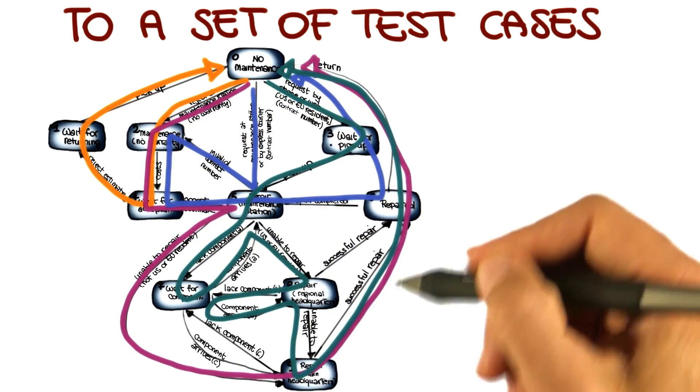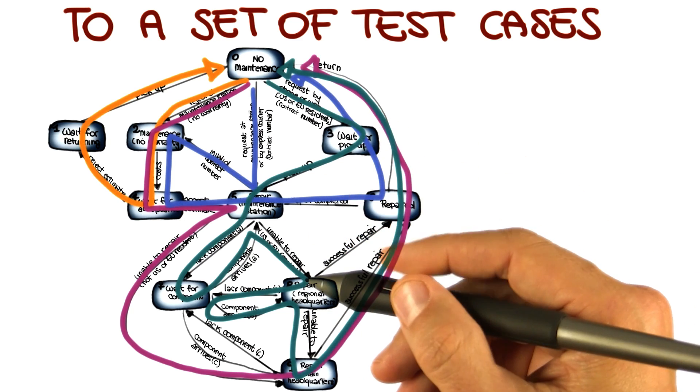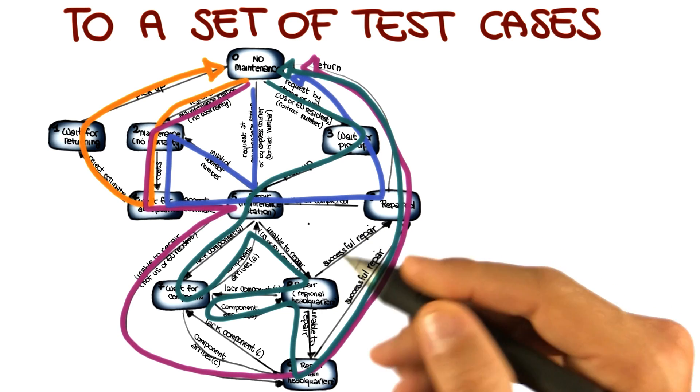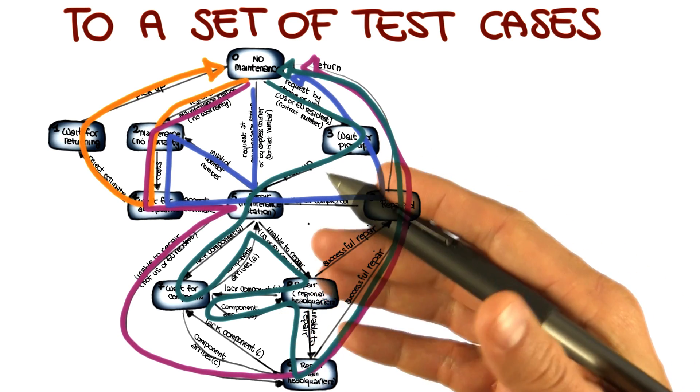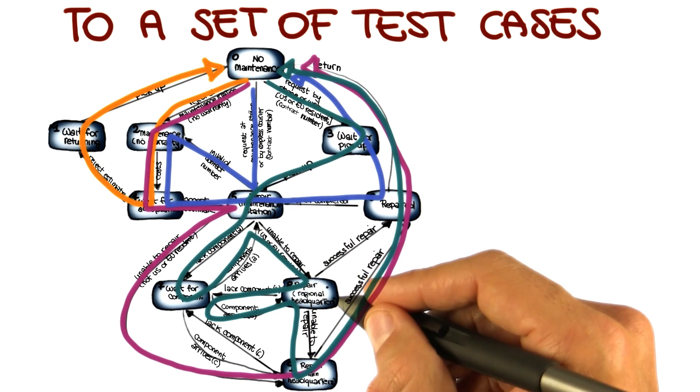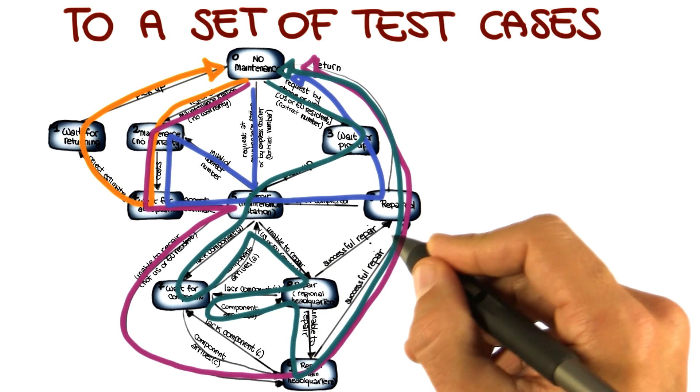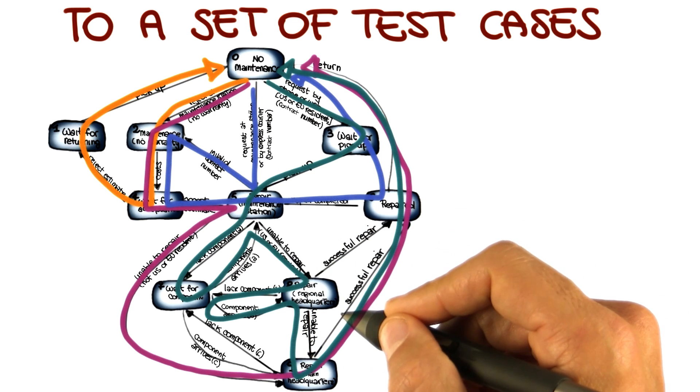I might want to go a little further and decide that I not only want to cover all of the states, but I want to cover all of the transitions. Because it makes sense to visit a state when coming from different states. And if I want to do that, and I look at the test cases that I generated so far, I can see that there is one transition, the one here, that is not covered. And the same can be said for the two transitions here.